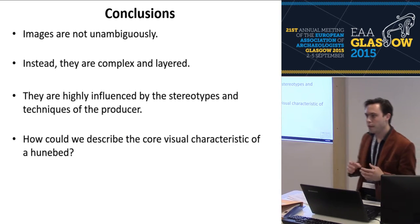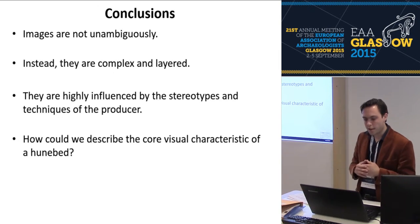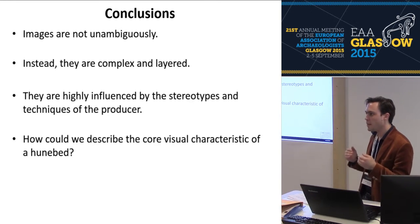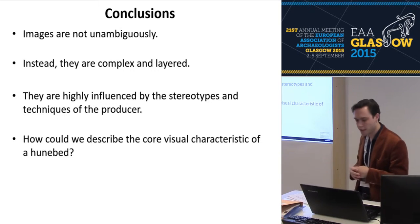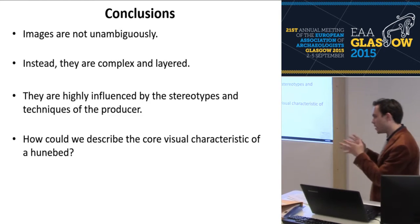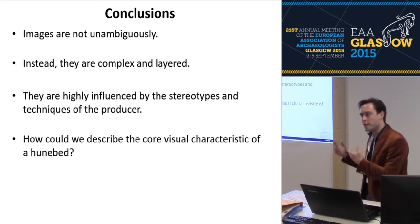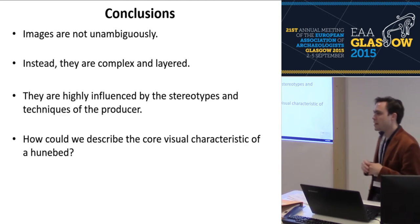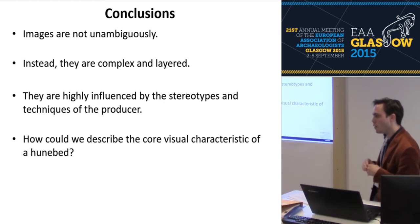With this inquiry done across several multifarious pictures, I have several conclusions. Images are not unambiguous, because they are layered — meaning that all the approaches I named are useful or needed to grasp the meaning of those pictures. They are highly influenced by stereotypes, as all the pictures more or less share a common denominator in terms of perspective. The core visual characteristic of the hunibet as an archaeological artifact is: at least three objects with at least one on top of them, in a specific ratio and relation to each other.